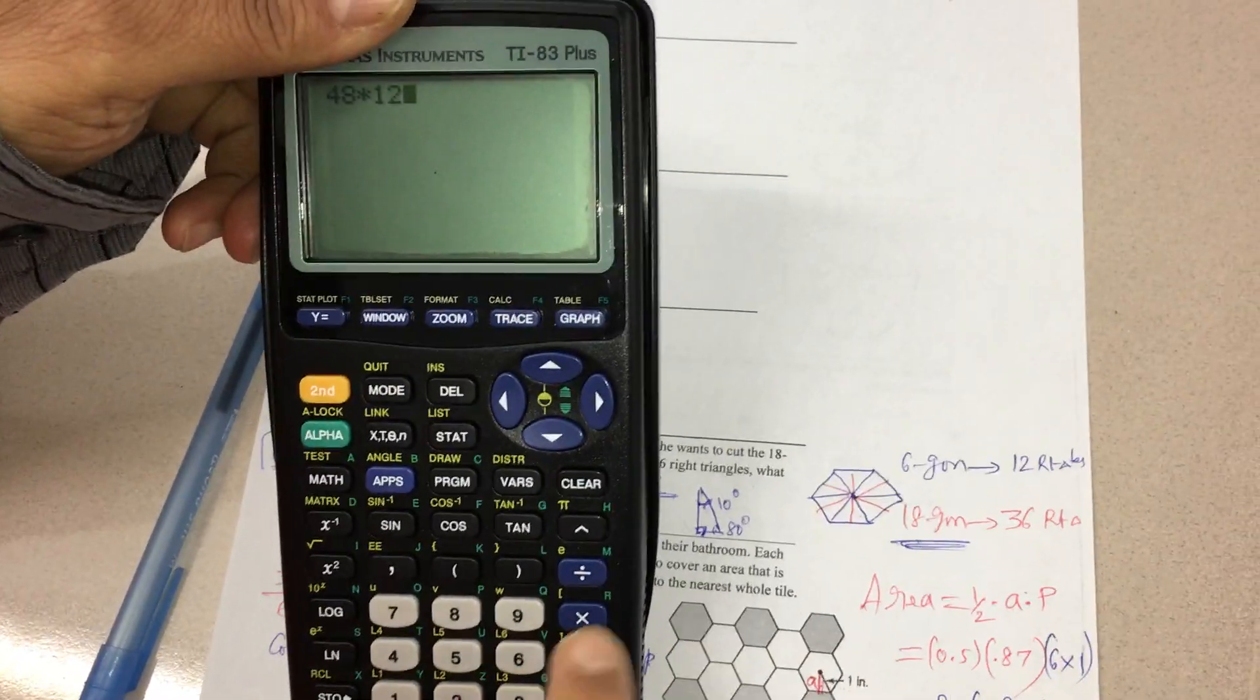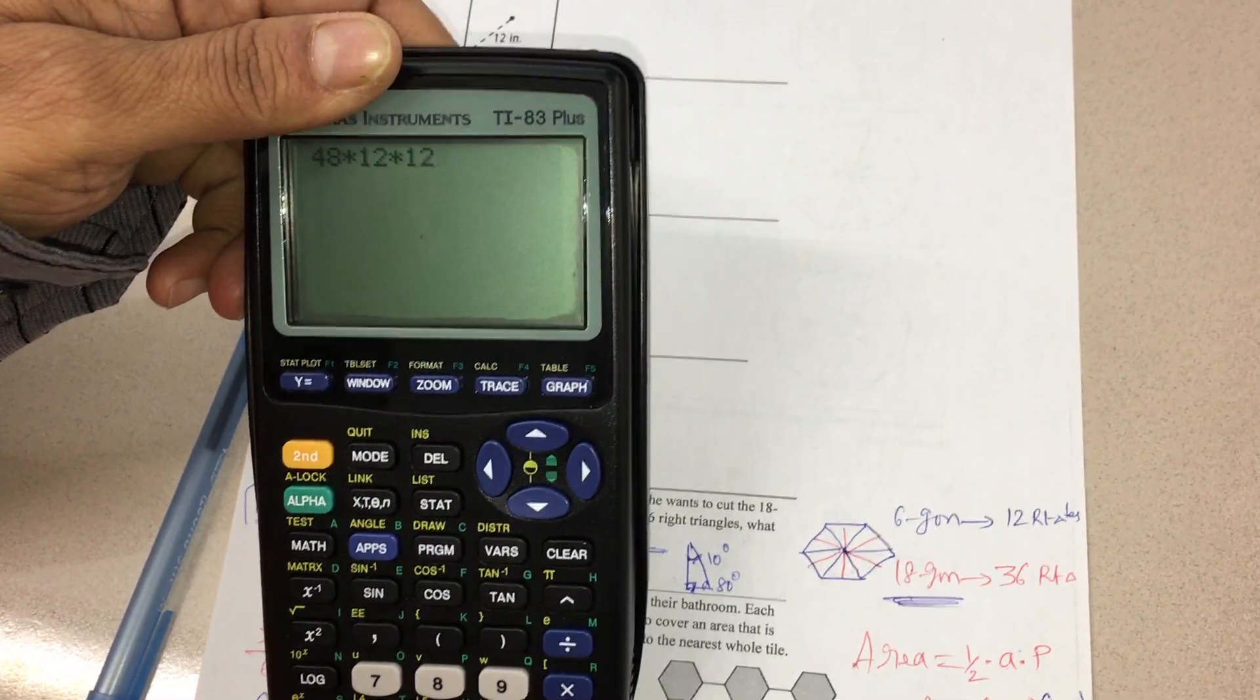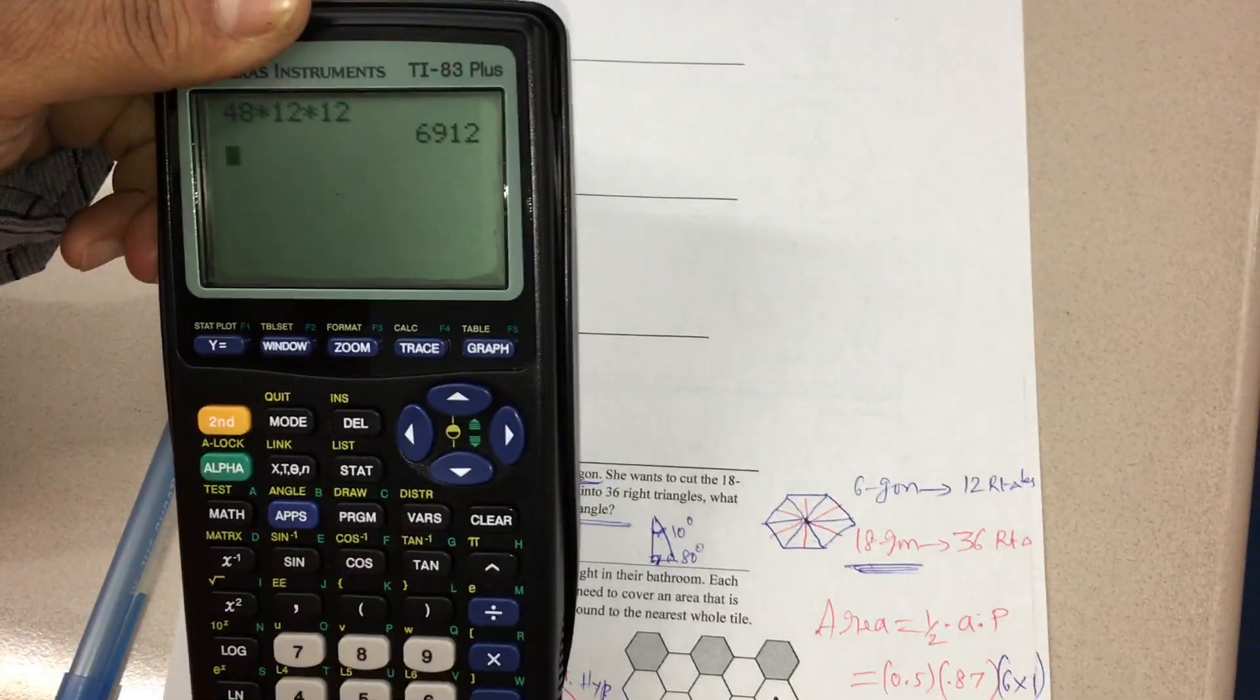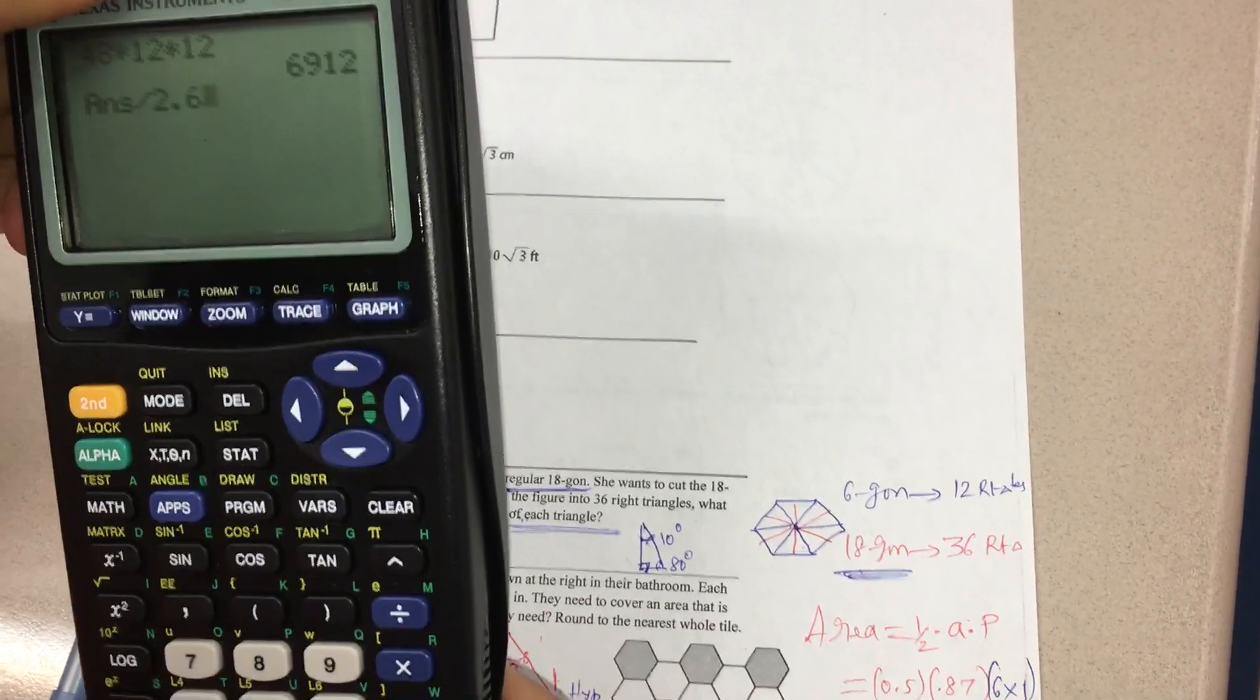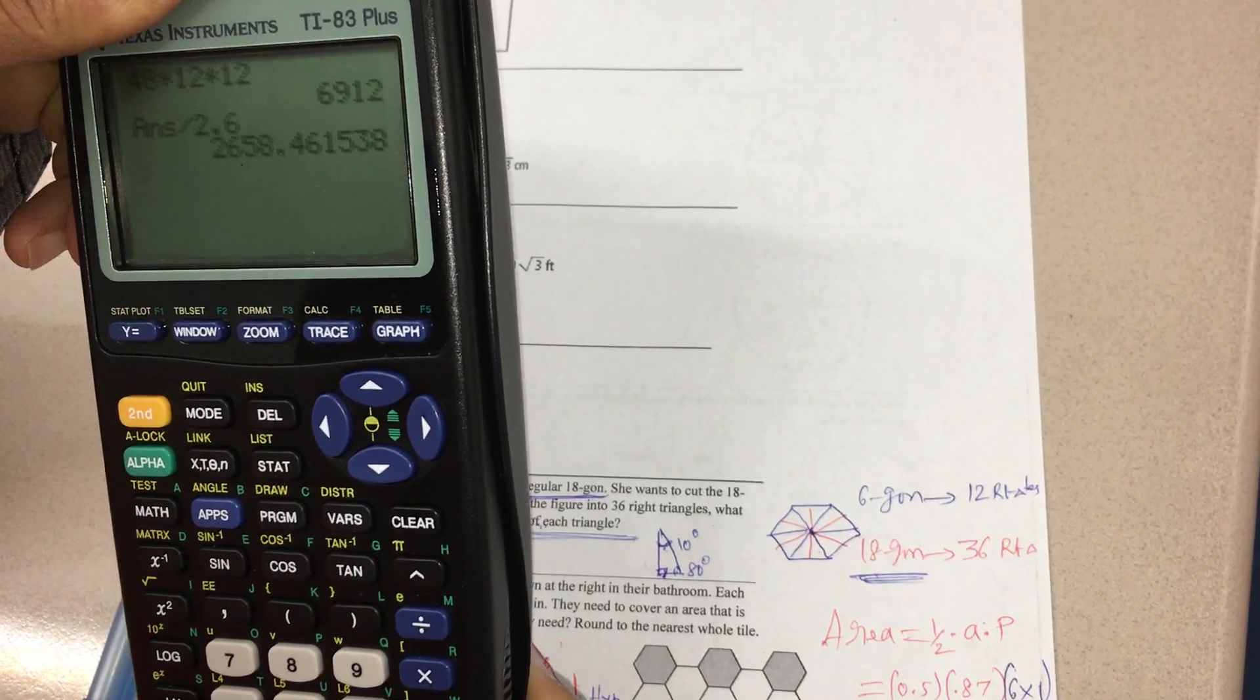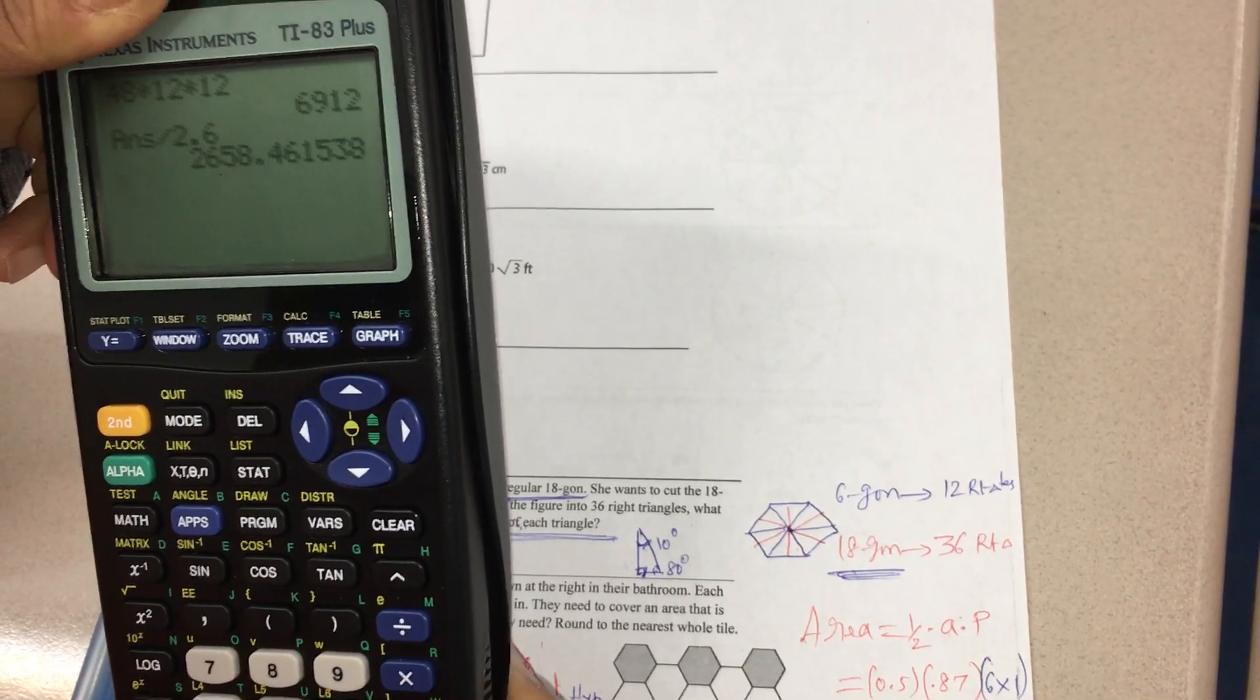48 times 12 times 12, if we enter, we got 6,912. That is to be divided by 2.6. Then I get 2,658.4.